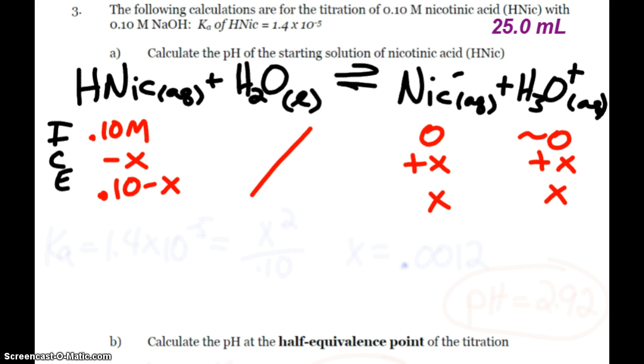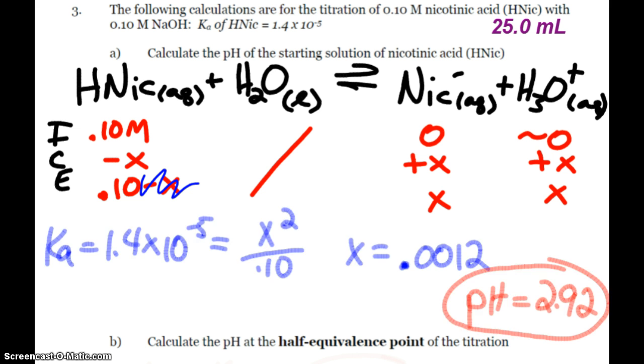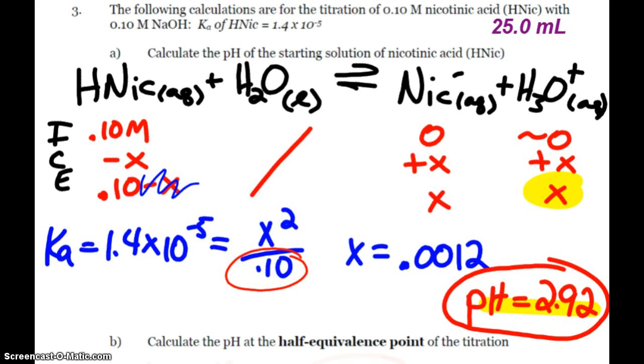I'm not going to need the quadratic. So I can just ignore this, and I can set up my Ka expression. Since I'm given a Ka value of 1.4 times 10 to the negative 5, that equals x squared over 0.1. X is 0.0012, which of course, x is equal to hydronium. And so when I take the negative log, I can get my starting pH. Every time you're looking at this, Ka is equal to x squared over the initial concentration. This always tends to be the case when we're dealing with weak acids and finding their pH.